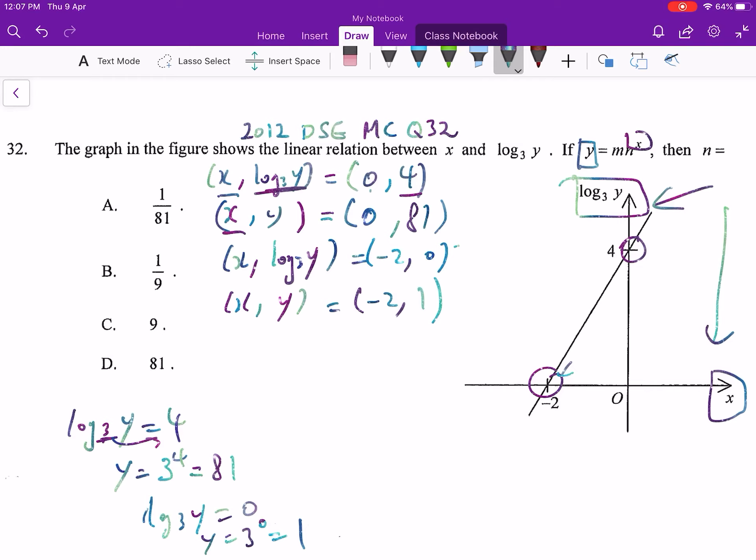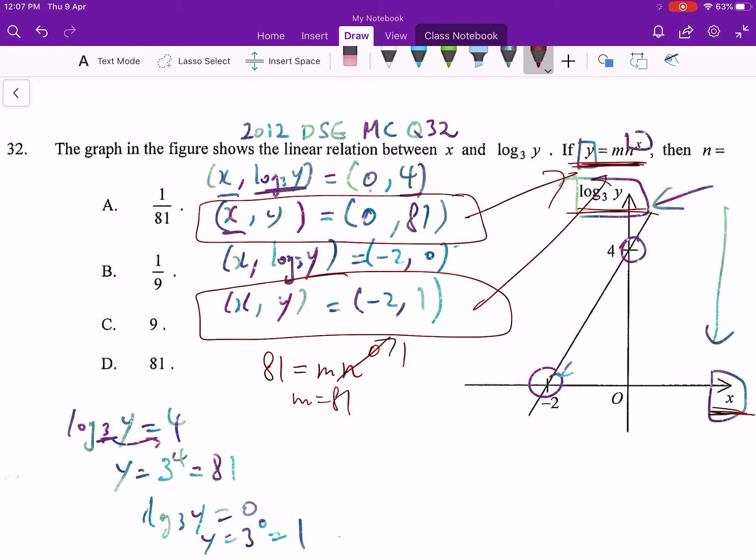Now these are the two points that after the transform of the logarithm coordinate become x and y. Now we can put back these two points to find our m and n. For the first one (0, 81), when y is 81, x is 0, so m to the power 0 is 1, that means m is 81.